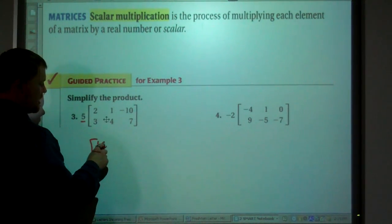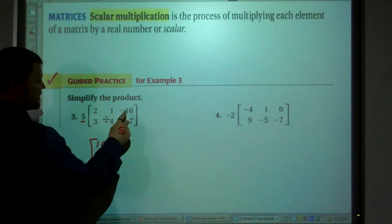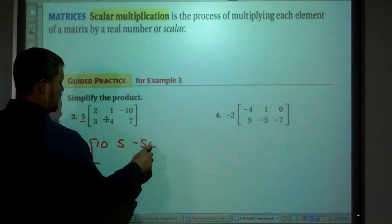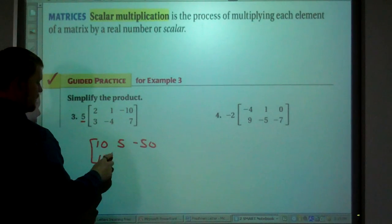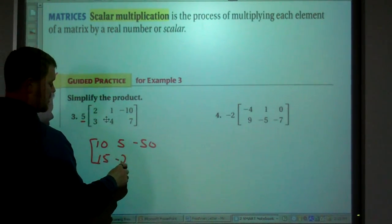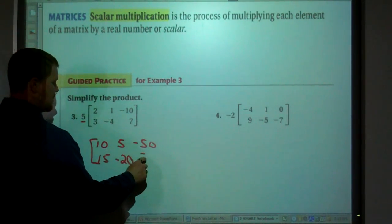So 5 times 2 is 10. 5 times 1 is 5. 5 times negative 10 is negative 50. 5 times 3 is 15. 5 times negative 4 is negative 20. 5 times 7 is 35.